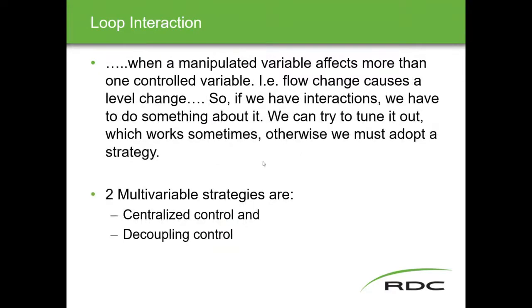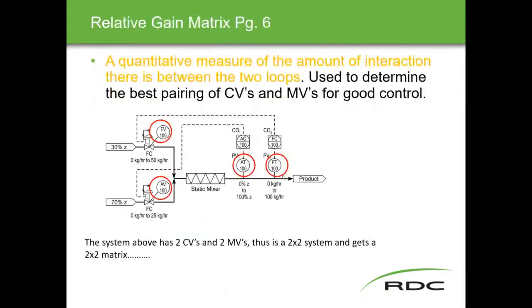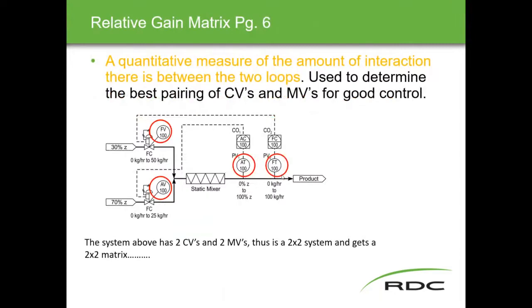We talked about two types of multi-variable strategies. There was a quick slide on centralized control that took all the inputs into one controller, manipulated them, and put out the signal. Then we moved on to the majority of the ILM which was based on decoupling control — decentralized, with two different measurements going into the same controller and outputs coming out.